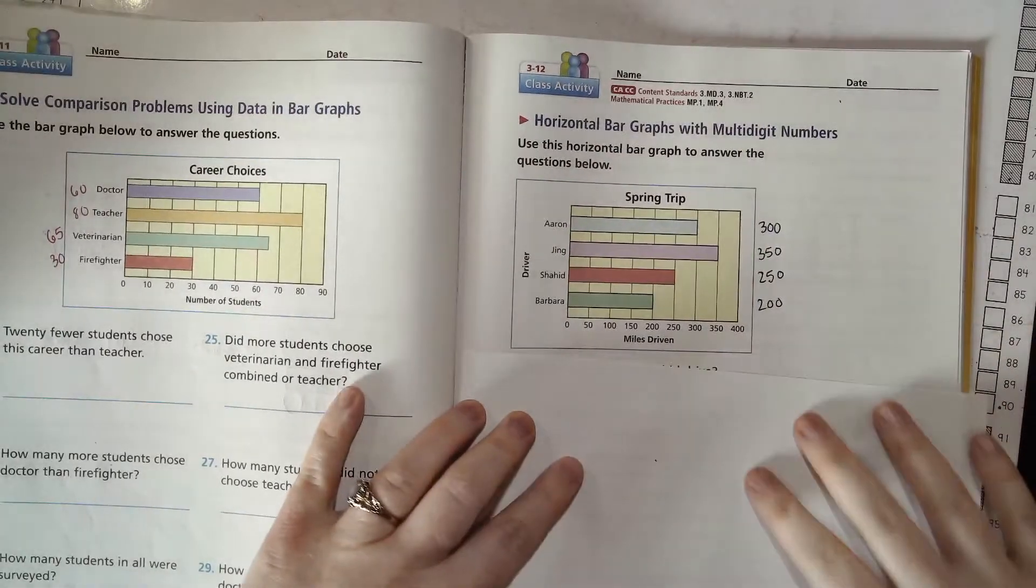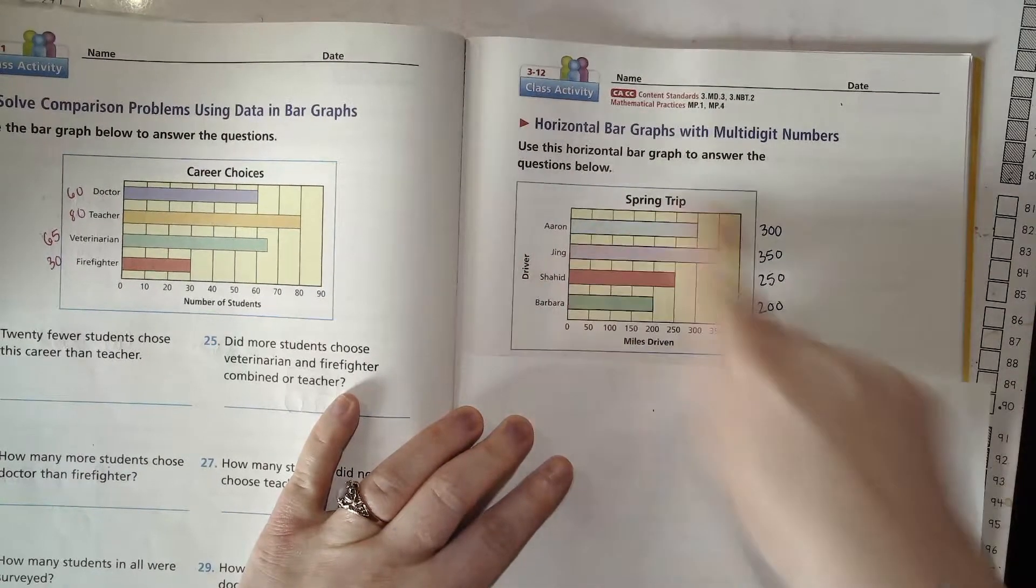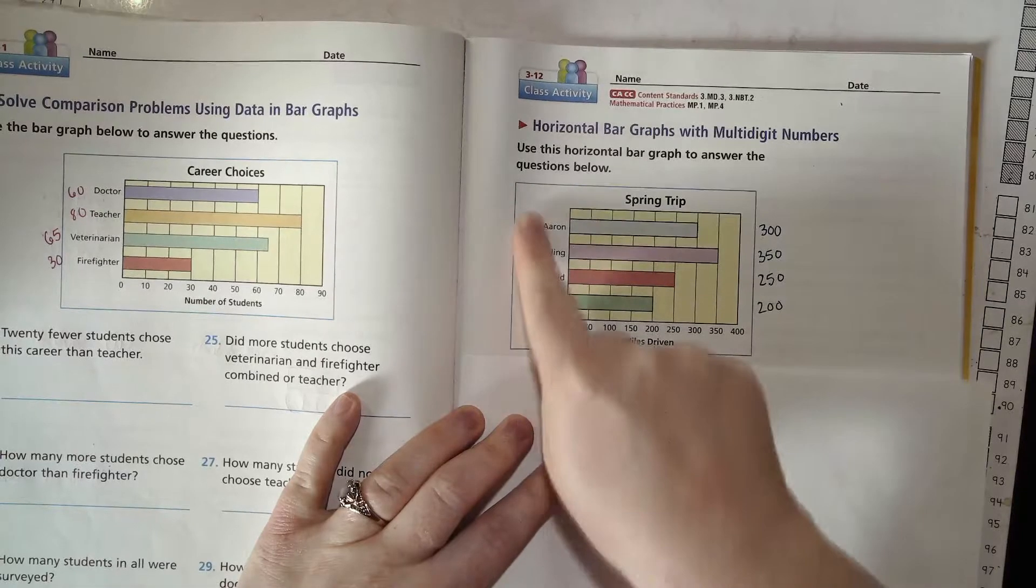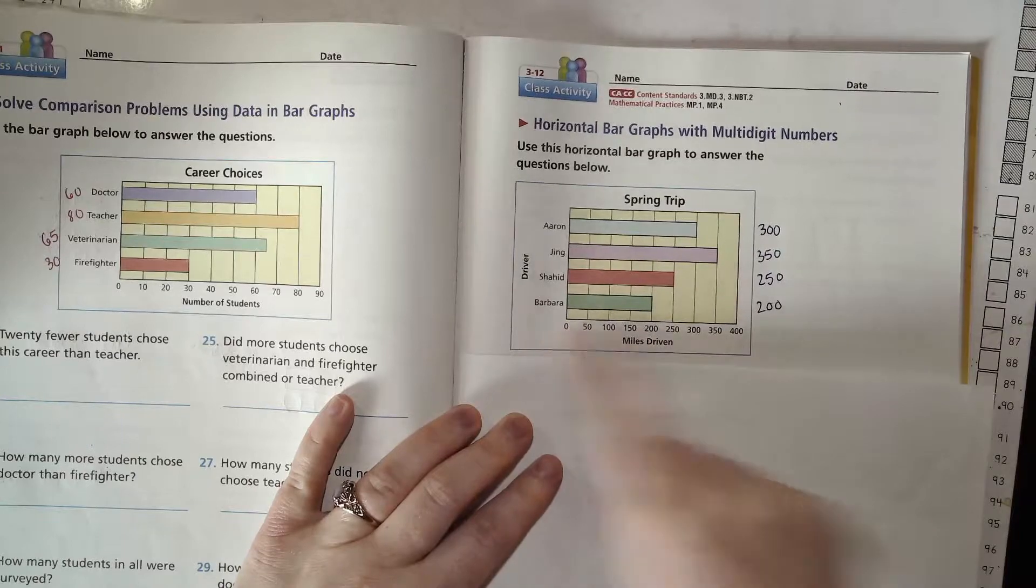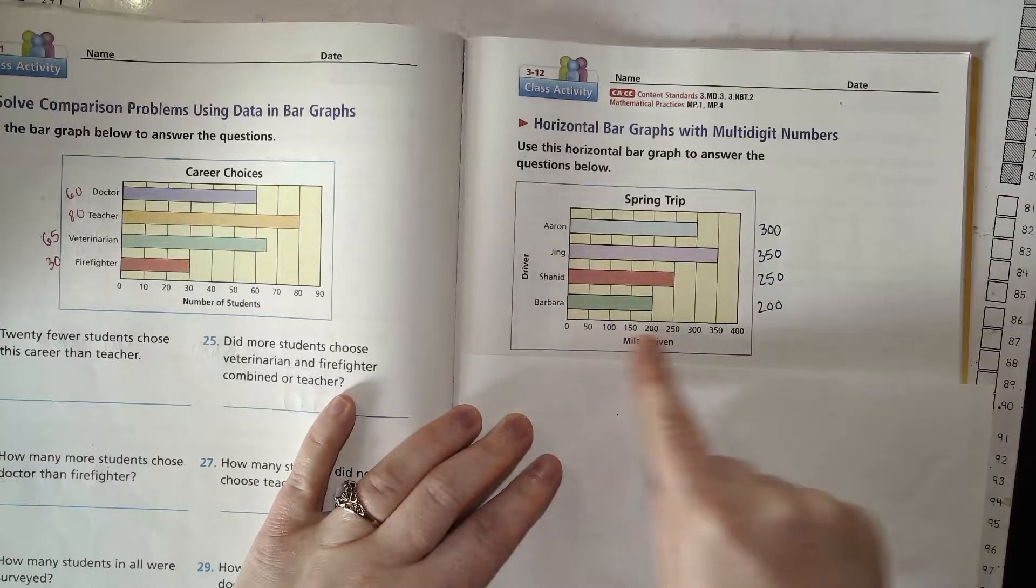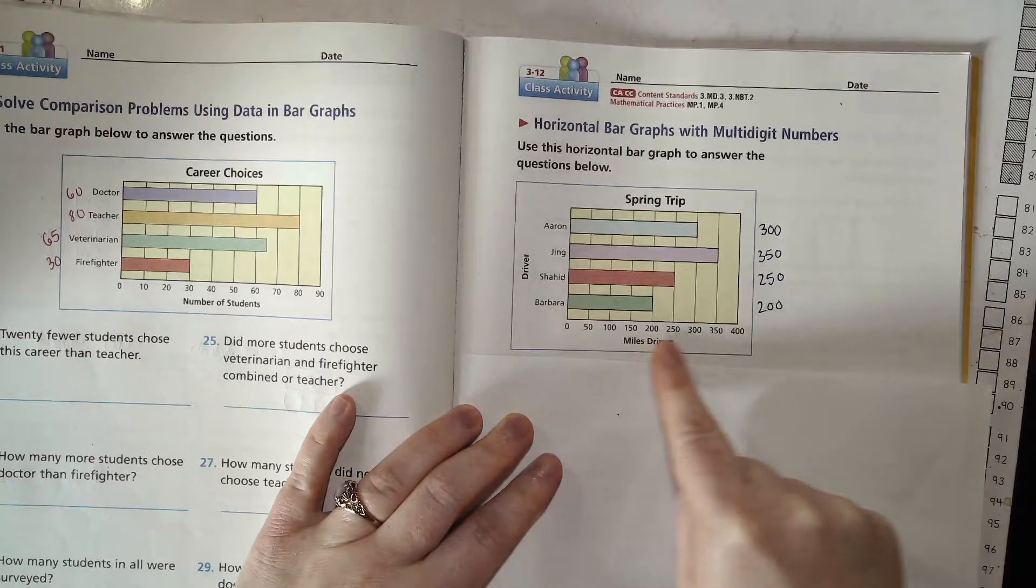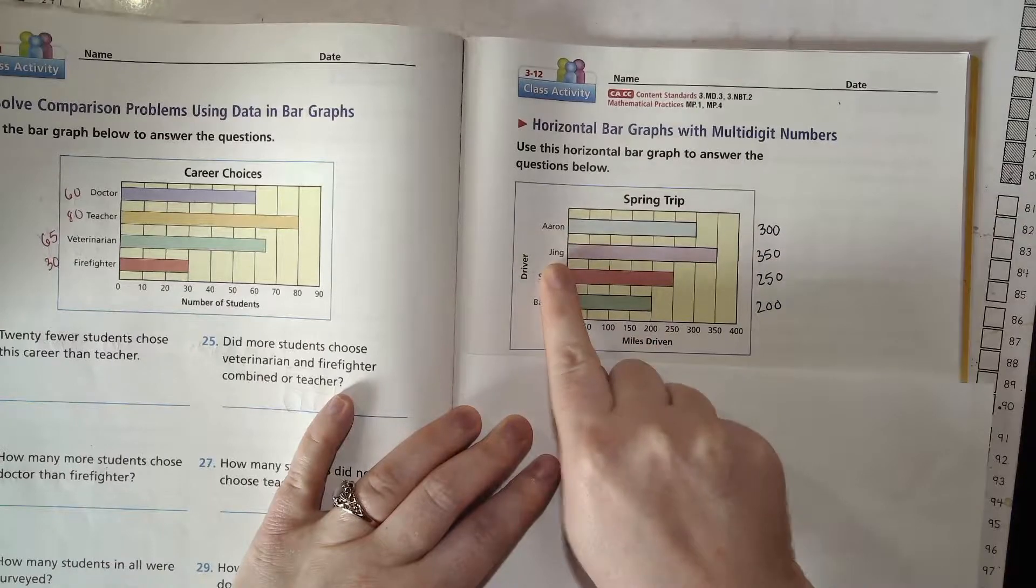So here we have a spring trip bar graph. The number of miles driven by each driver is represented on the graph. So we have our categories, drivers, and our numbers of the miles are down below, starting at zero here on the zero line and then going out in increments of 50 out to about 400. And our drivers are Aaron, Jing, Shaheed, and Barbara.